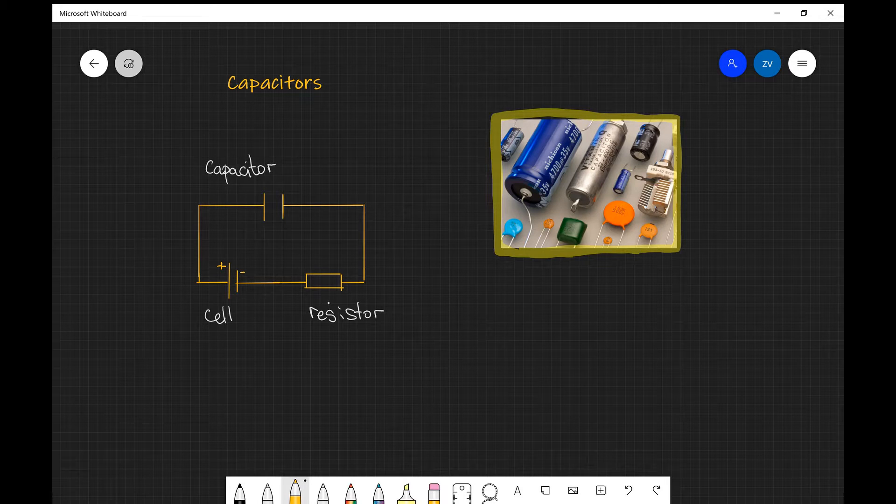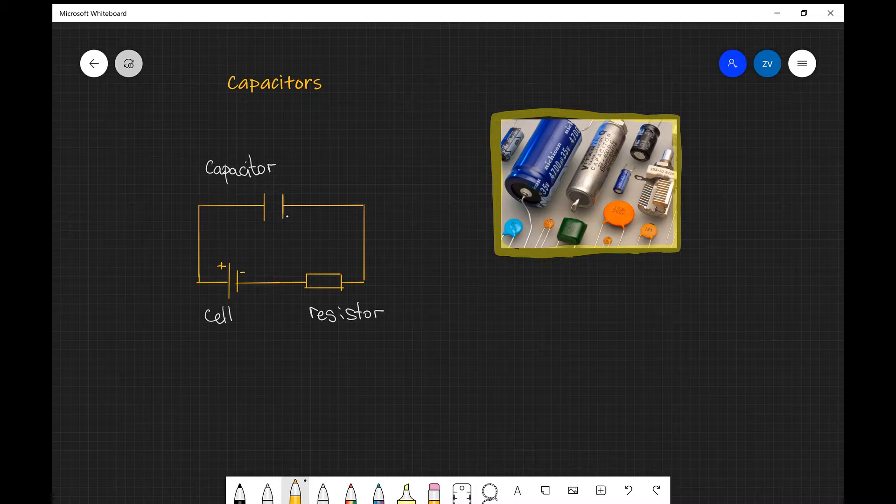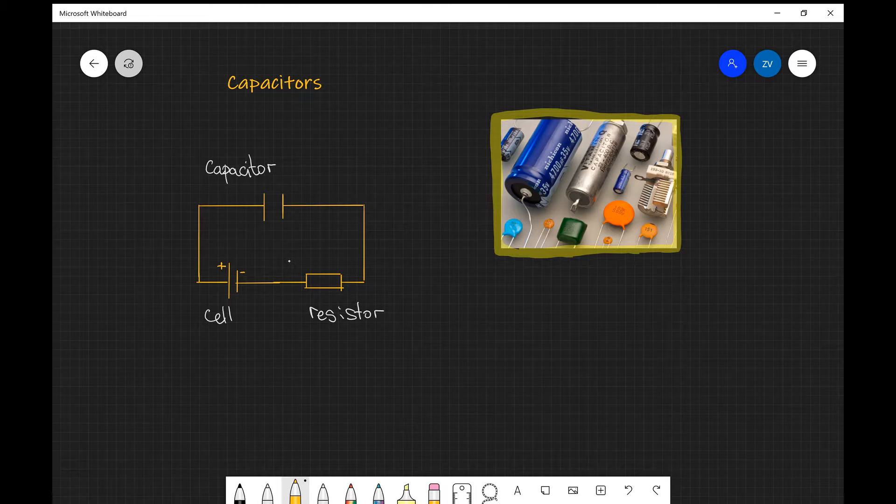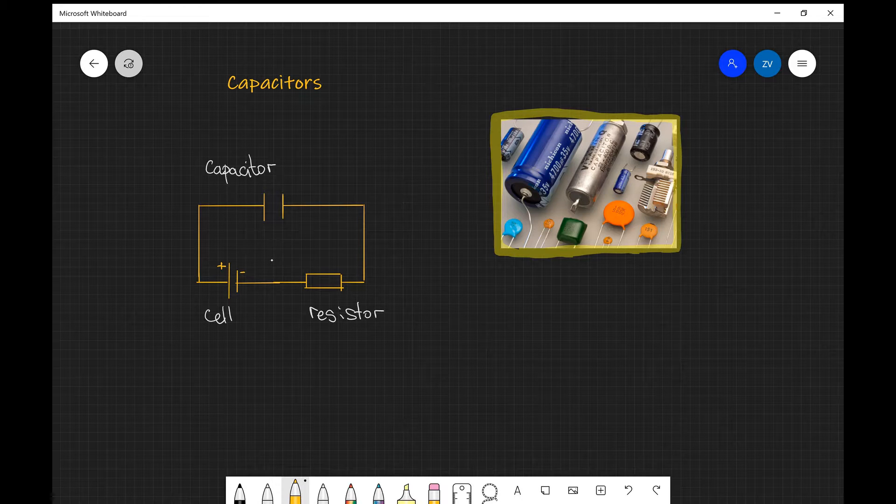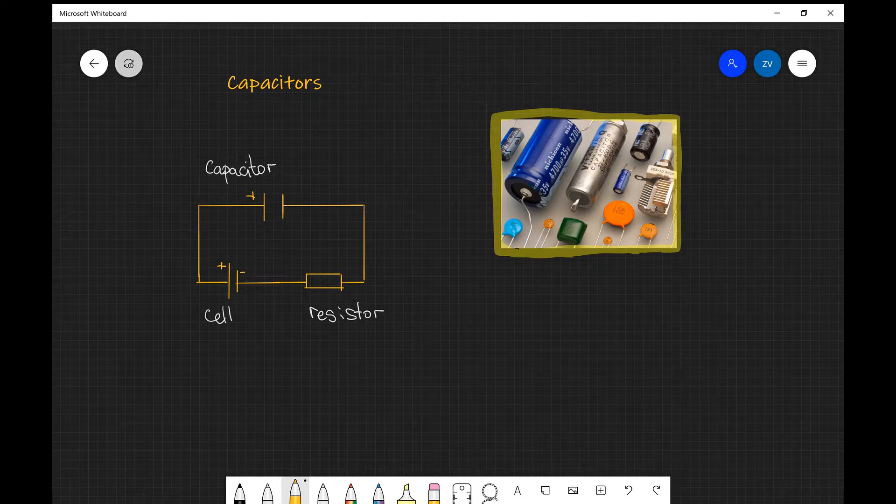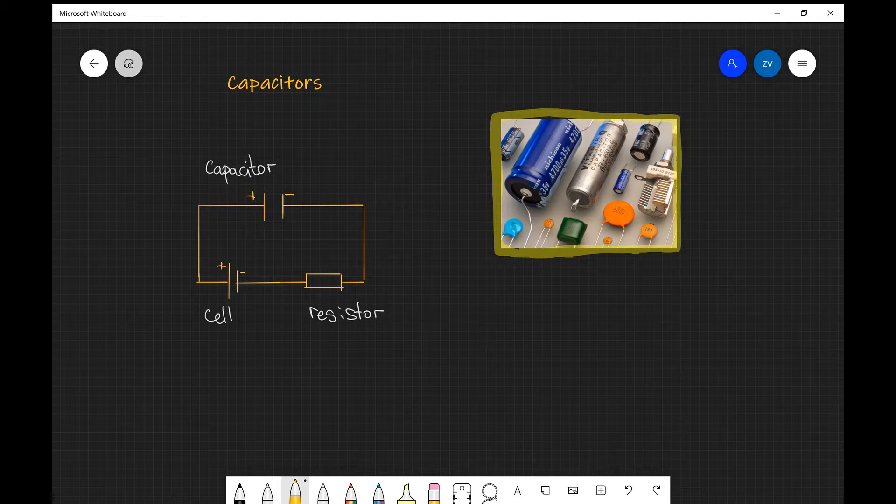Now a capacitor, as you can see over here on the left, will have two plates. The one connected to the positive terminal will acquire positive charge, and the one connected to the negative terminal will acquire negative charge.